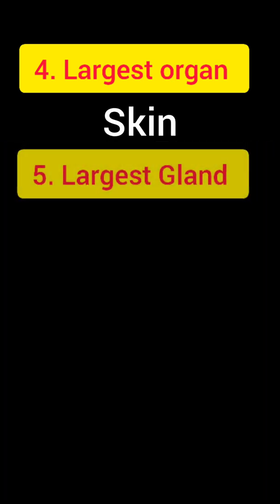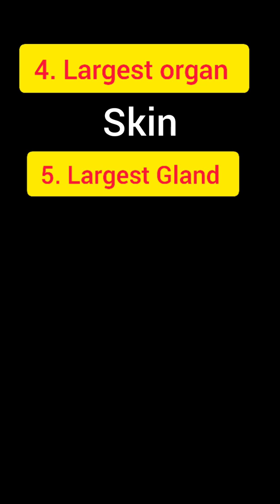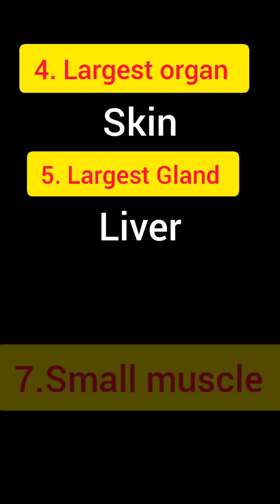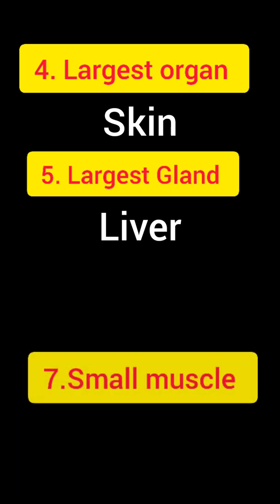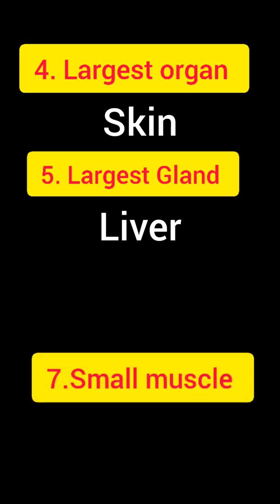Question number 5: the largest gland of our body. The right answer is liver. The largest organ is skin and the largest gland is liver. Question number 7: smallest muscle. The right answer is the stapedius.